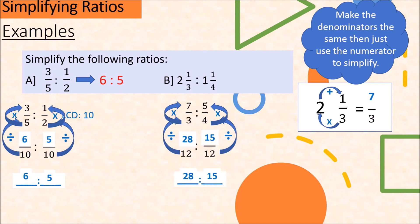Can we simplify 28 is to 15? Not anymore. They don't have any common factor. So that means 2 and 1/3 is to 1 and 1/4 simplifies to 28 is to 15.